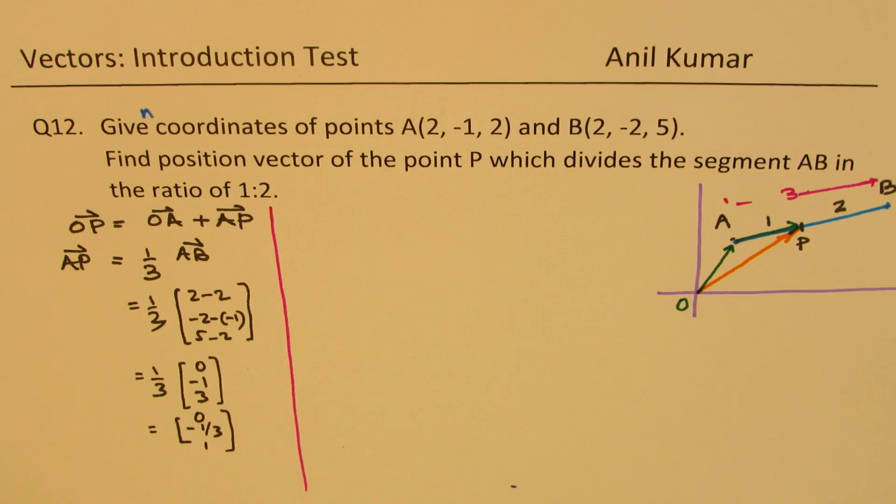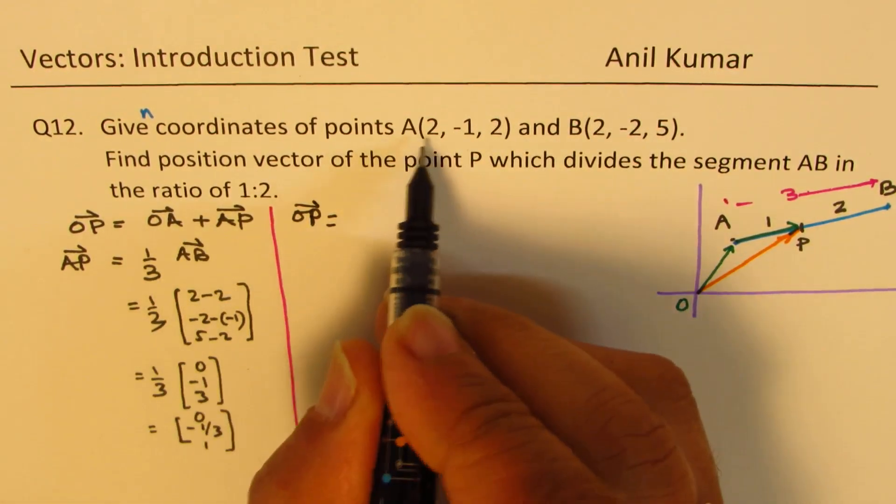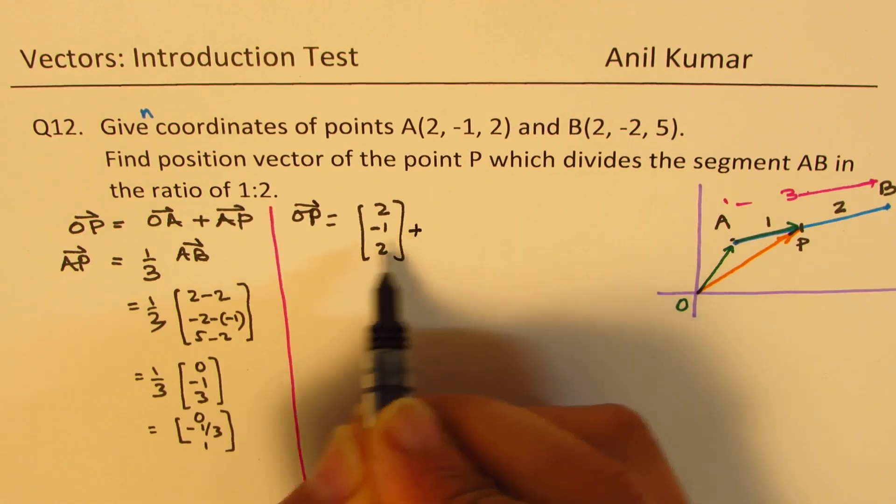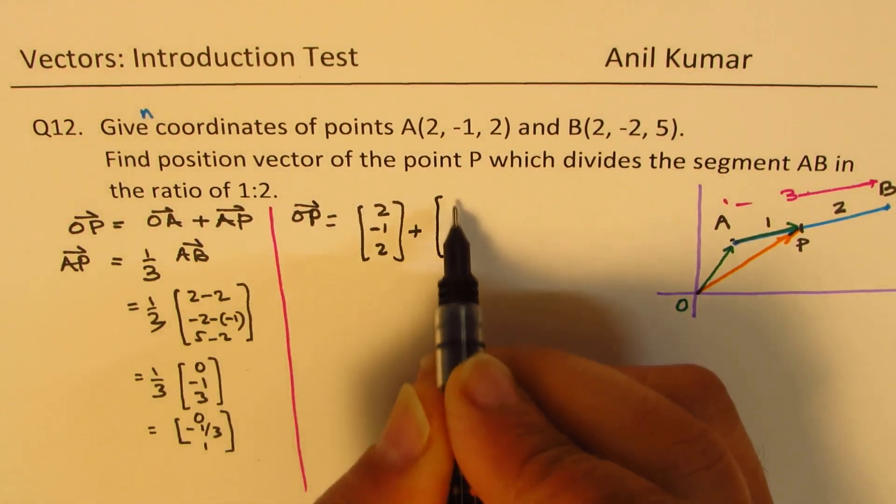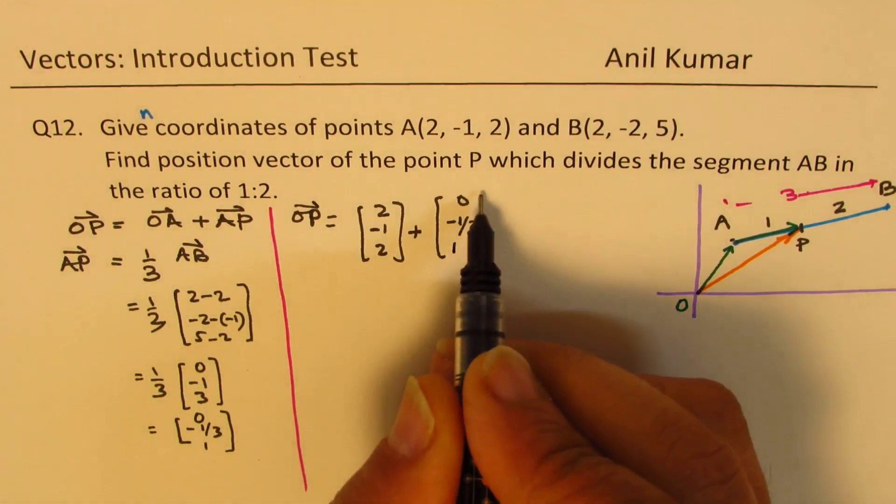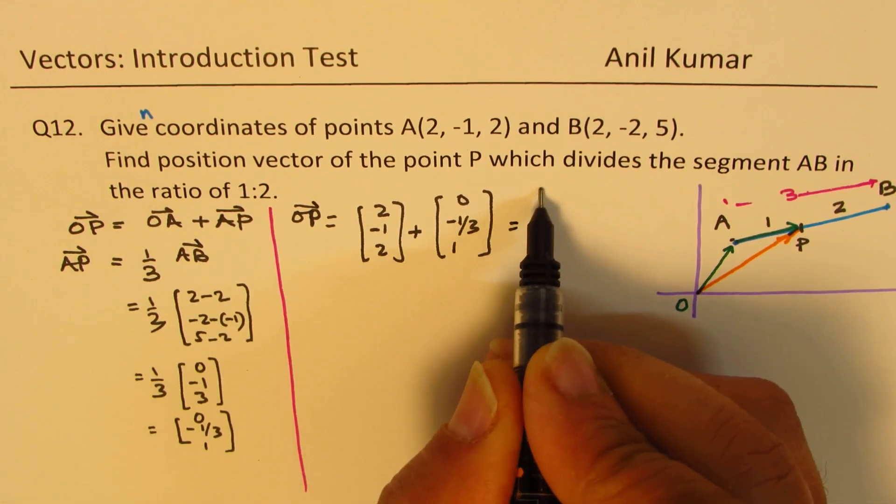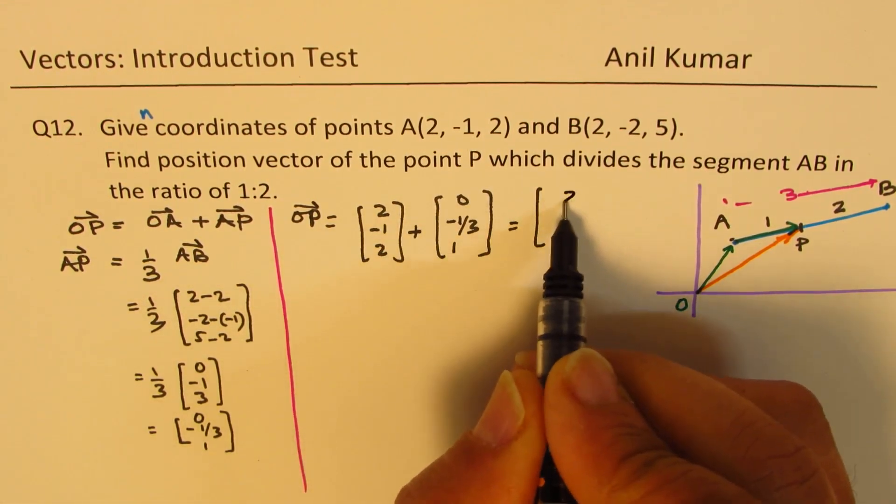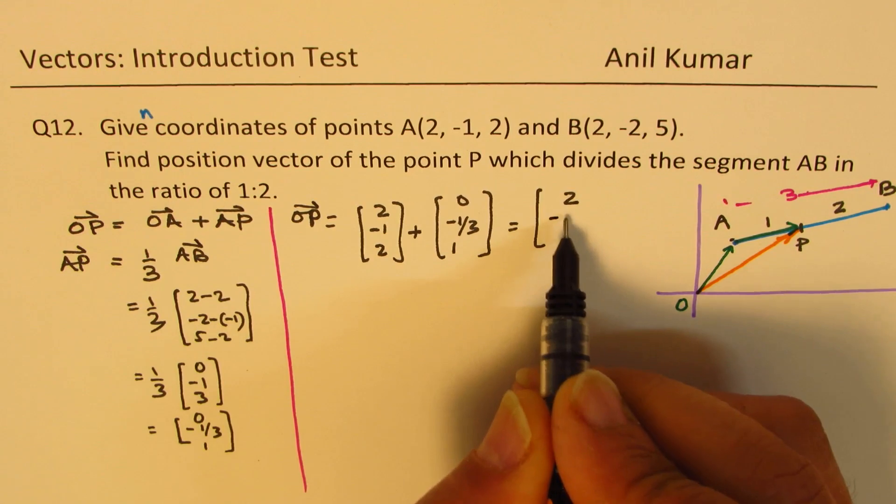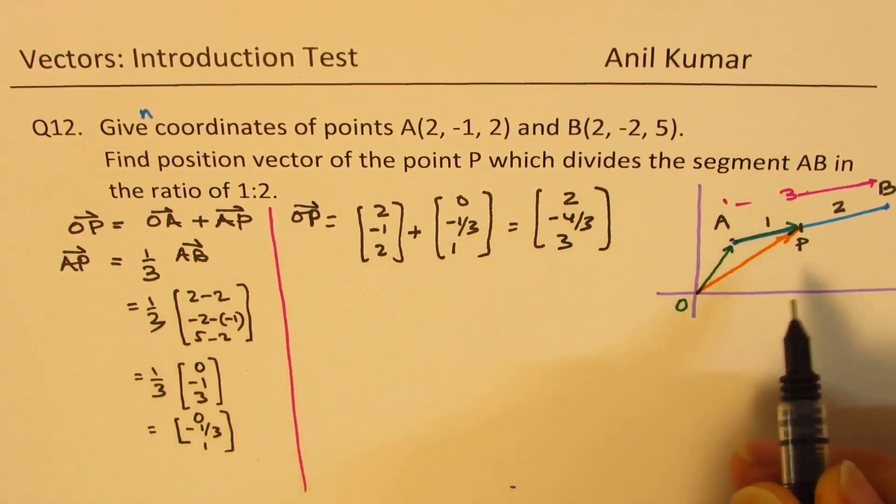We can now find what OP is. OP will be OA, which is given to us as (2, -1, 2) plus AP, which is (0, -1/3, 1). That gives you the value as 2, -3 minus 1 is -4 over 3, and 2 plus 1 as 3. We get OP.